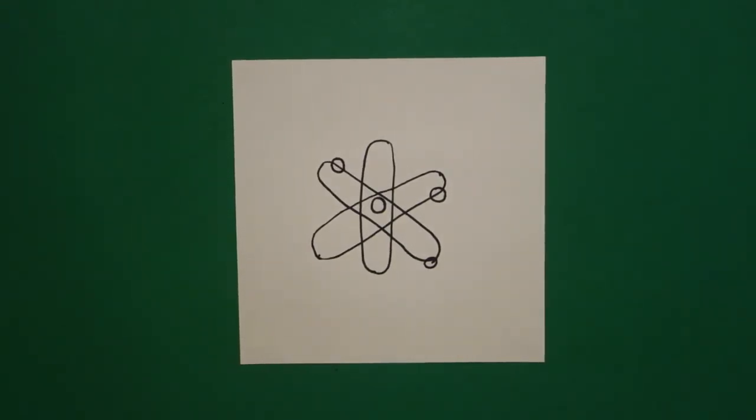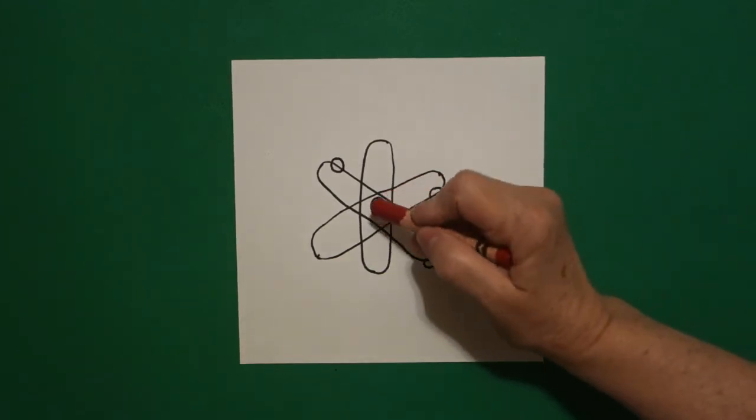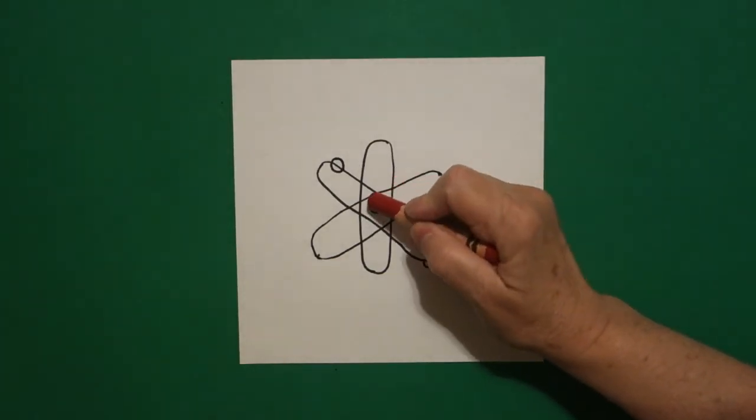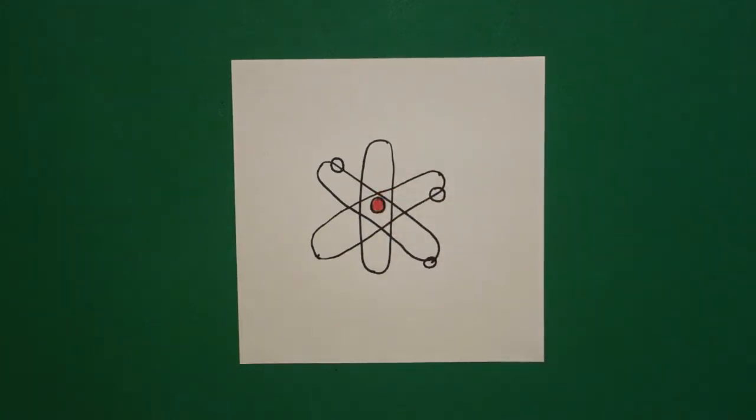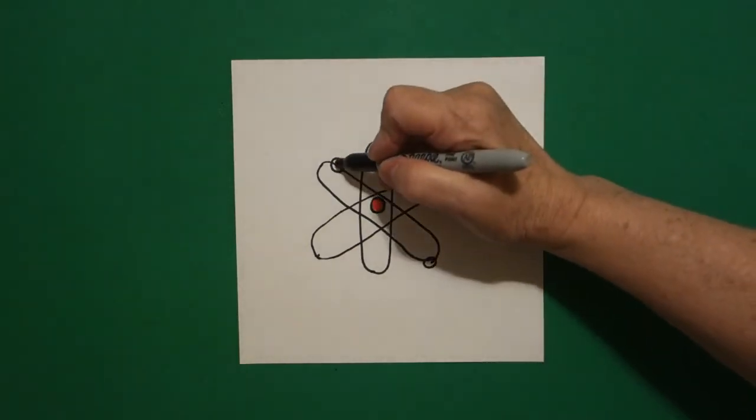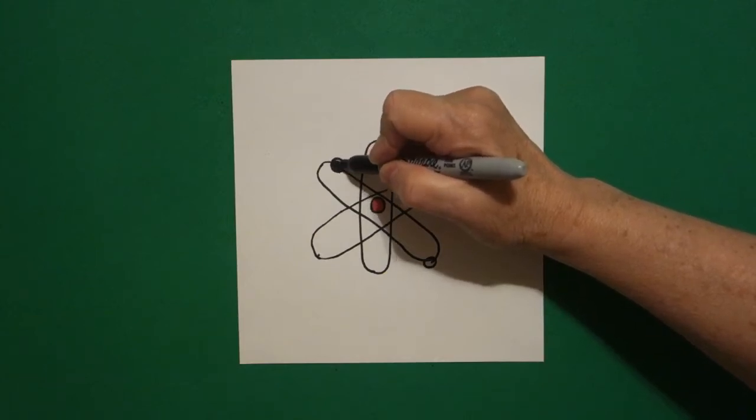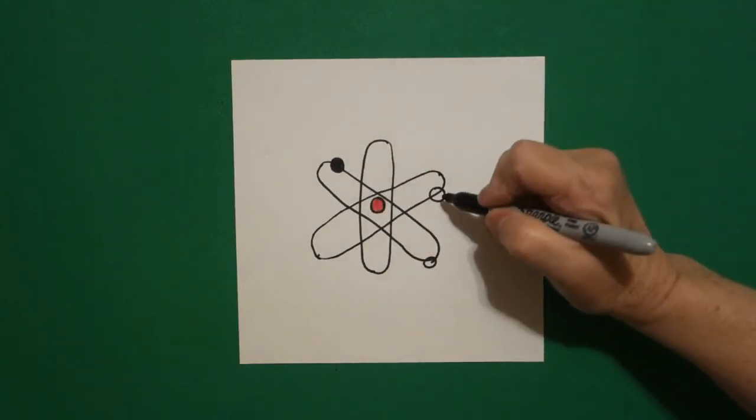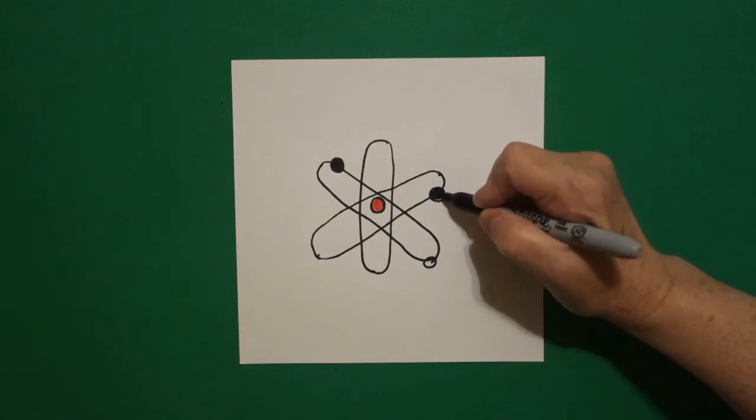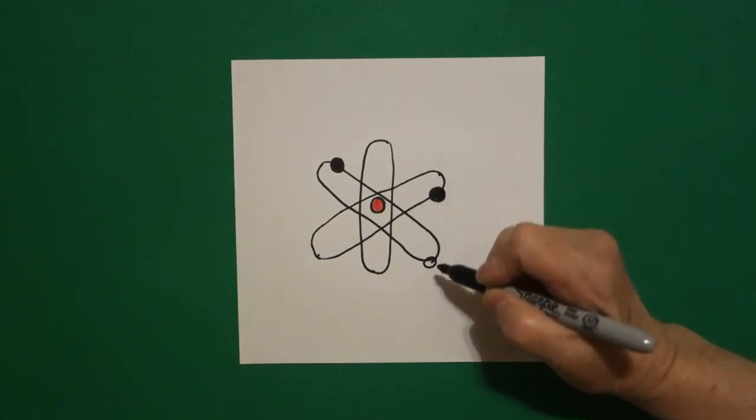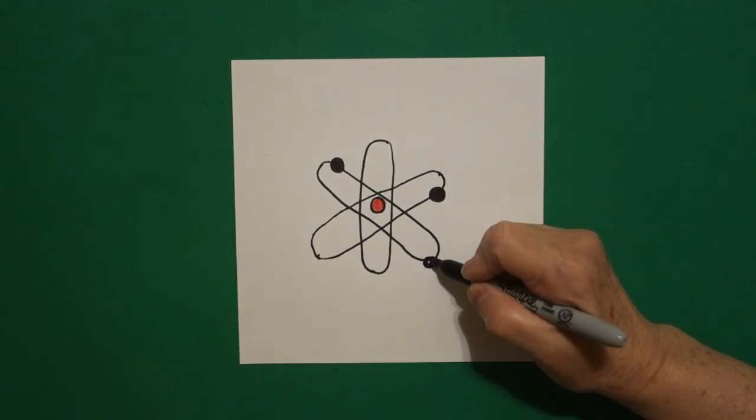OK, the easiest part is just take a red crayon and color that inside baby circle. Then take your marker or take your black crayon and color the outside baby circles black so that you can't see the lines going through them. You can also make them a little bit more round if they need to be.